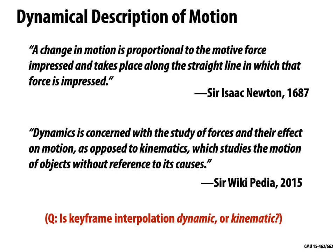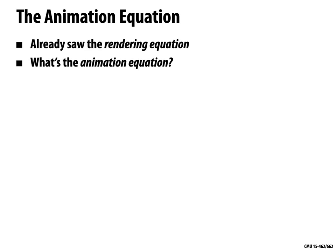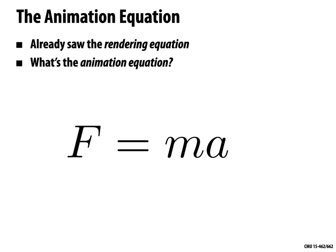What's an example of a dynamic description of motion? Just as in rendering we had the rendering equation, in computer animation we have the animation equation — and this one you may have seen before. The animation equation is just f equals ma, something you've seen in physics class: force equals mass times acceleration. This is ultimately the equation we want to solve to generate motion.